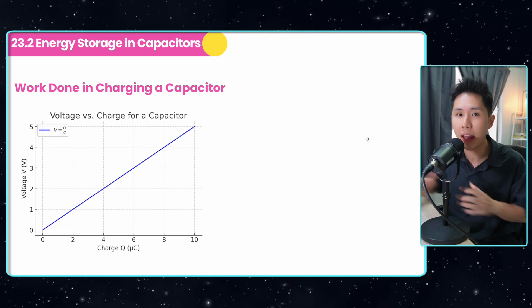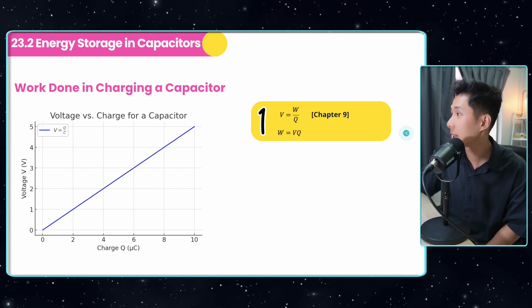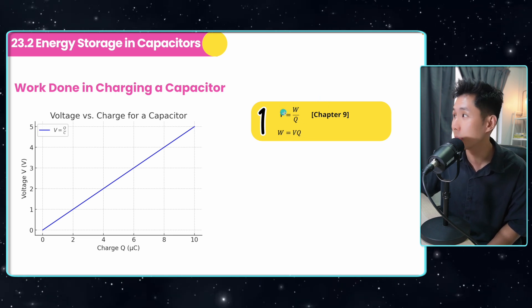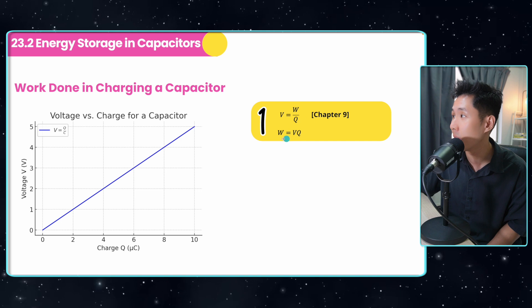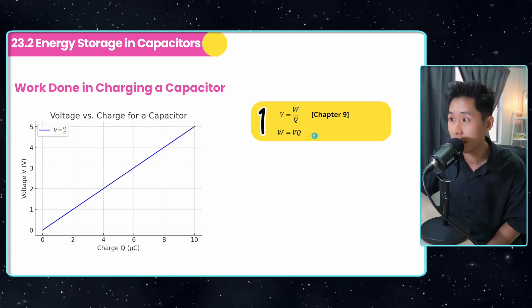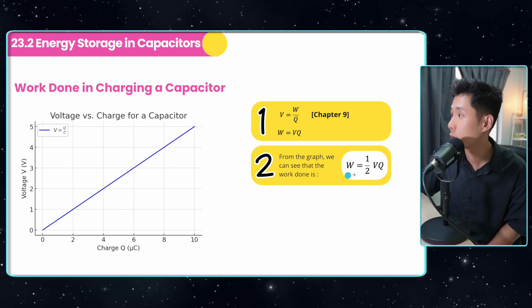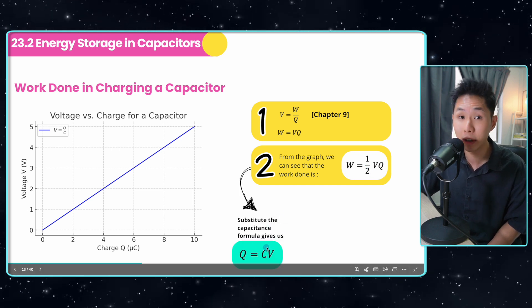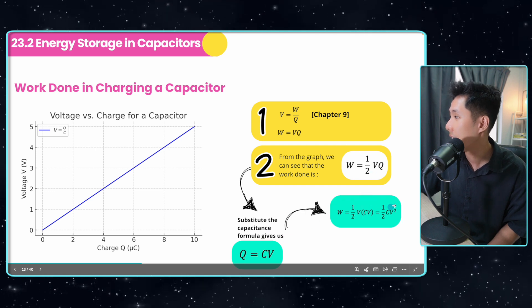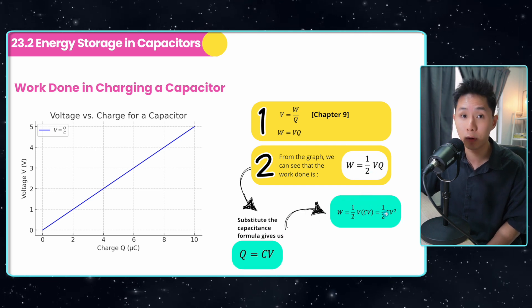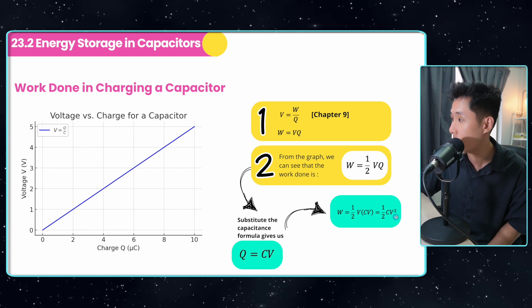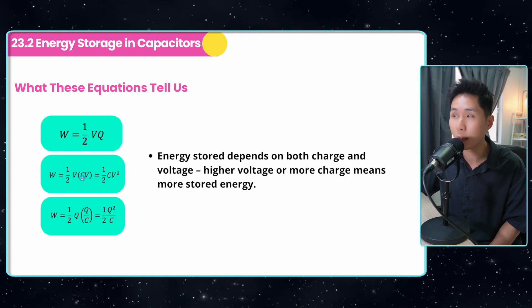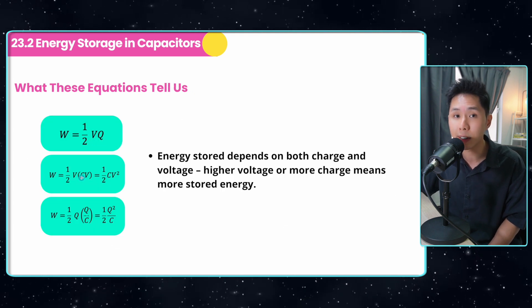So how do we figure out the amount of energy stored in the capacitor? In chapter nine, this is the formula we learned: work done. Voltage is how much work done is required to move one coulomb of charge. So we have work done equal to VQ here. From the graph, you can see that the work done is equal to one half VQ. So we can substitute the capacitance formula that we learned previously into this formula. And we will have gotten work done equal to first equation, half CV squared. Second equation work done equal to half Q squared over C. These three equations allow us to calculate the energy stored in a capacitor.